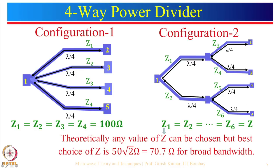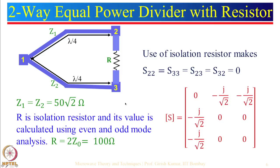In general, the two lambda/4 section design will have more bandwidth compared to the single section. Then we looked at the equal power divider with a resistor, where the resistor value is 100 ohm. When we discuss even and odd mode analysis, you will understand how this value comes into picture — so you have to wait for one or two more lectures.